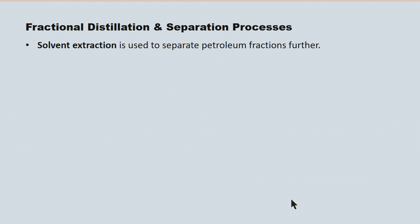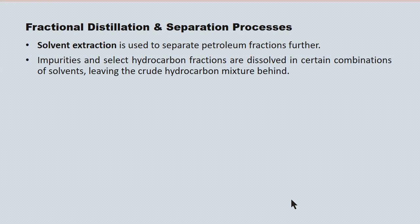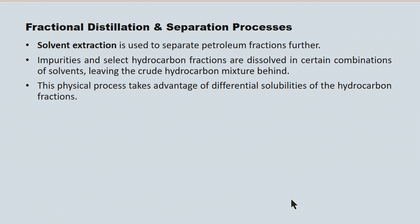Once we've separated hydrocarbon fractions based upon boiling points, we employ a process called solvent extraction to further refine petroleum fractions. Impurities and certain desirable hydrocarbon fractions are dissolved off using combinations of solvents, leaving behind the remaining crude hydrocarbon mixture. This is a physical process that takes advantage of differential solubilities of the hydrocarbon components.